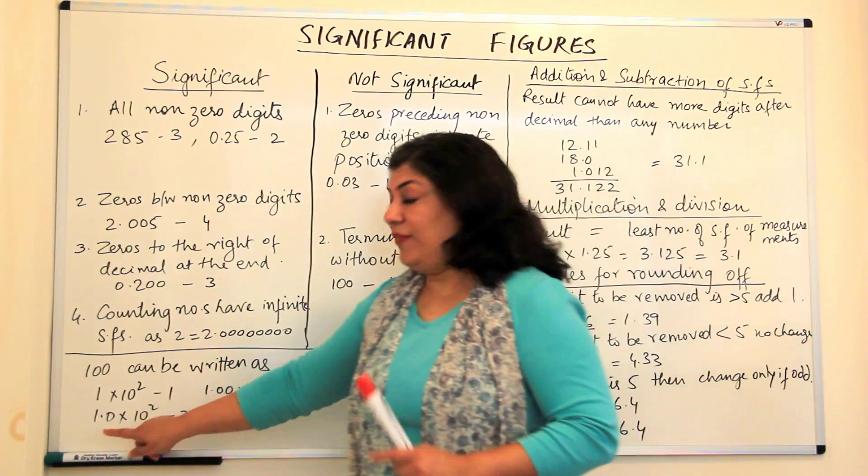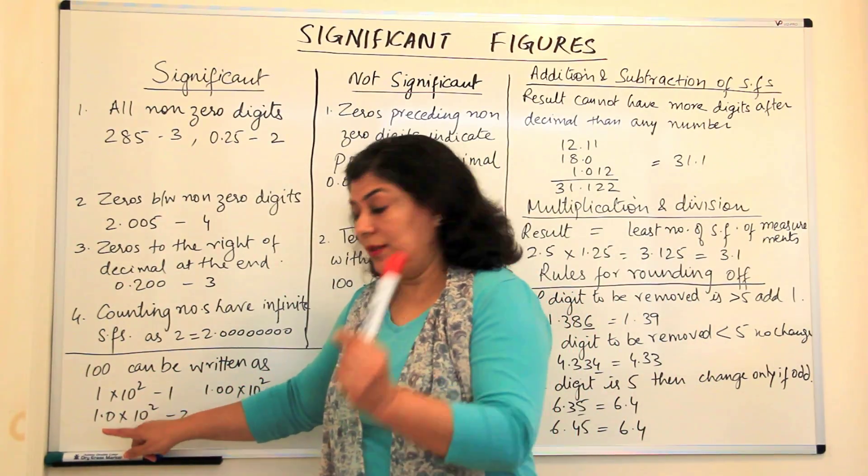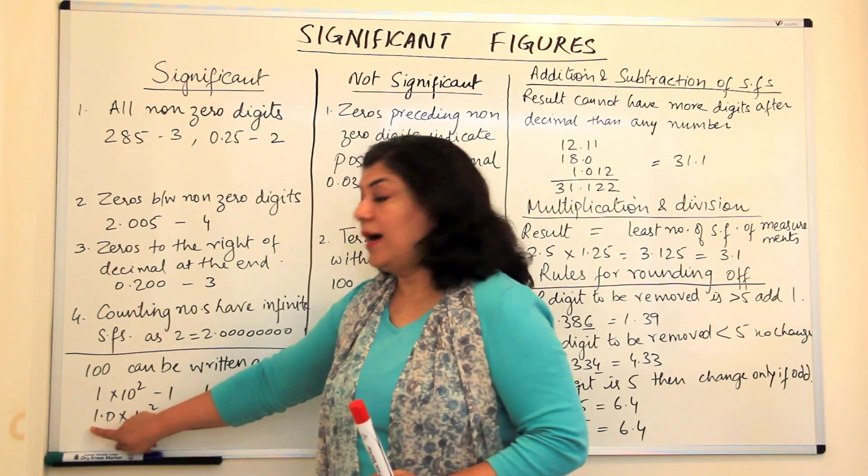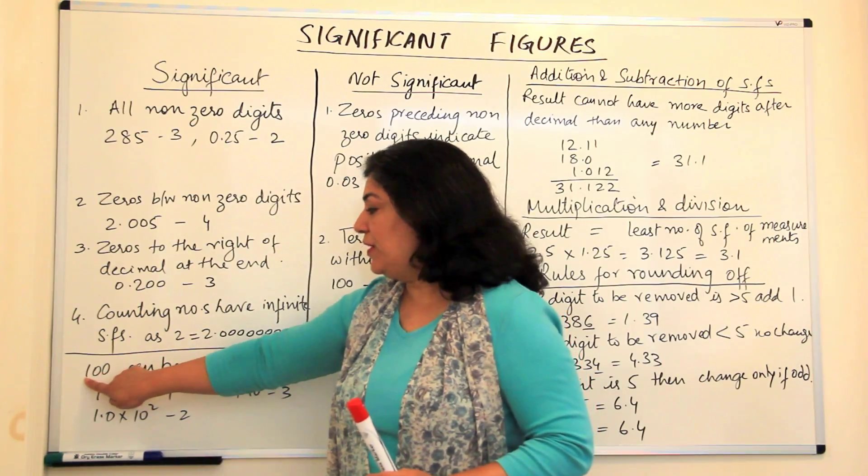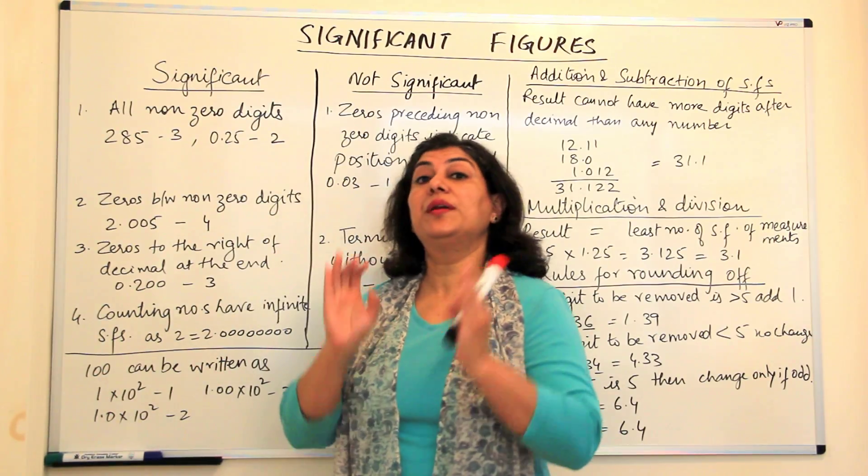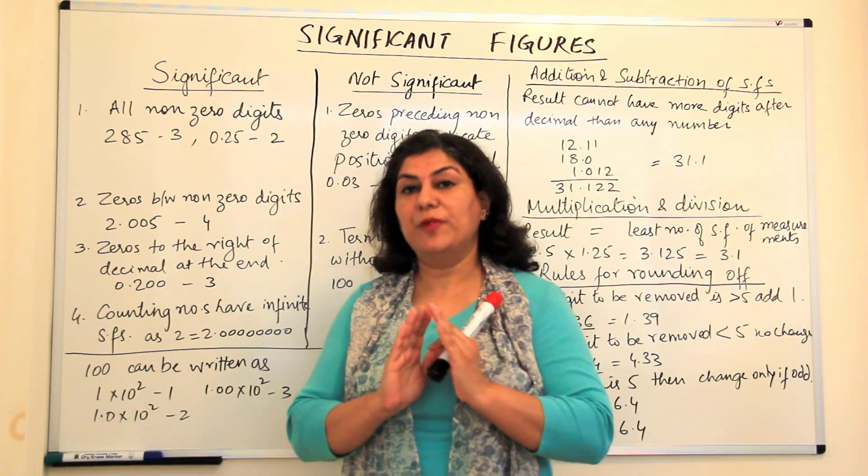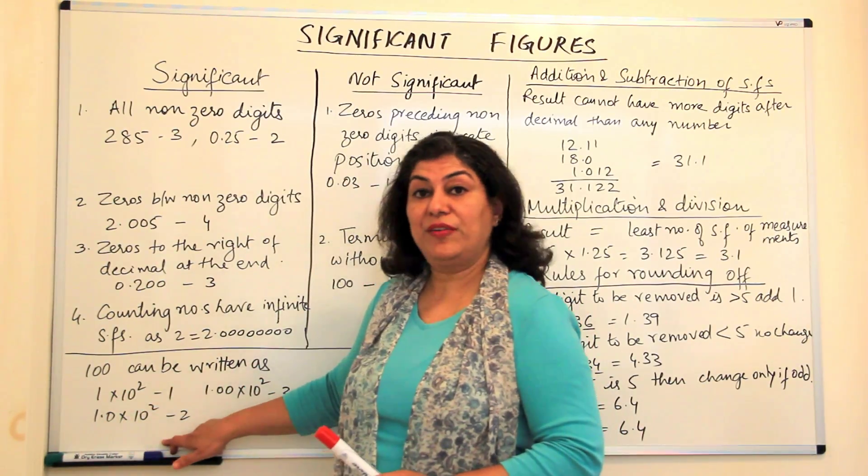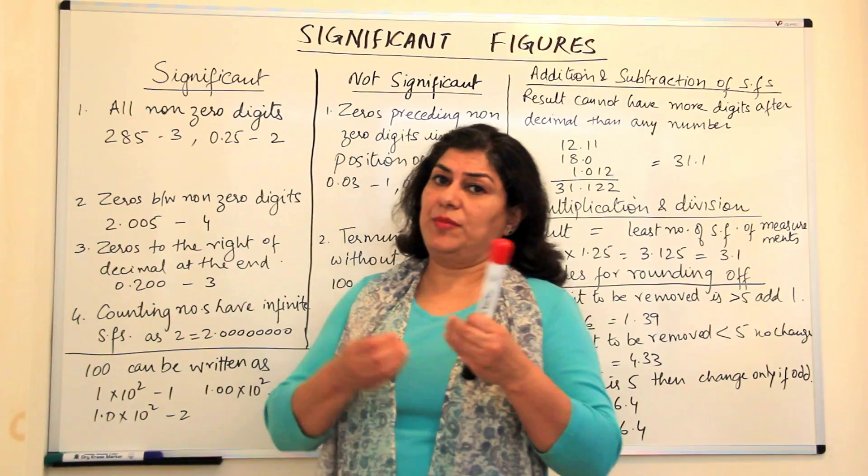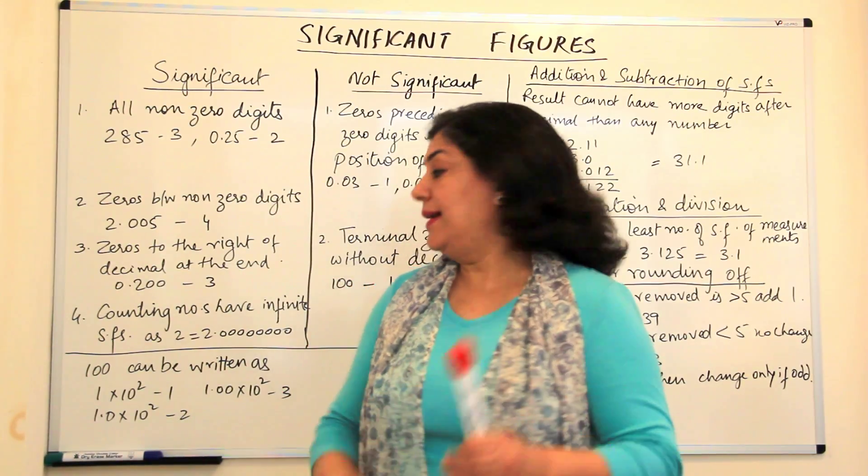Or if I have calculated up to the next position also, then I would write 1.0 into 10 to the power 2, which means that the first and the second digits in that 100 both are significant. I'm very sure that they are right.